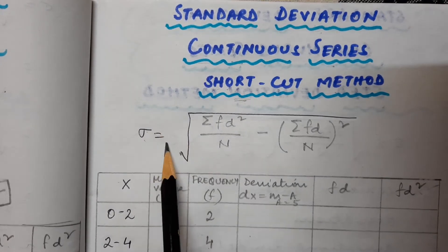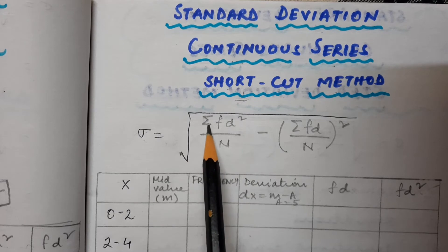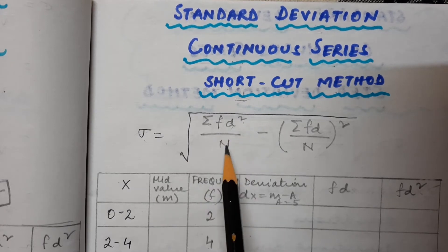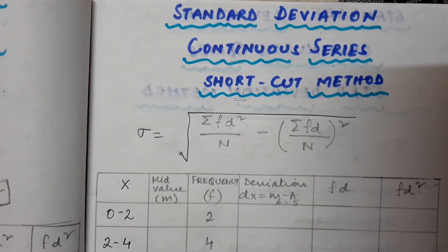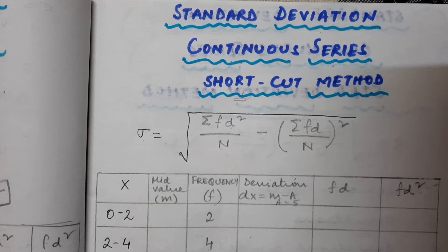The formula for standard deviation under the shortcut method is: square root of (Σfd² / n) minus (Σfd / n) whole square. In all these methods, whether it is the shortcut method or direct method for continuous series, the most important thing is that you remember the formula for standard deviation.